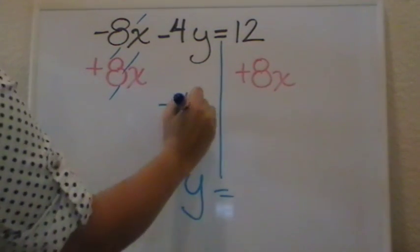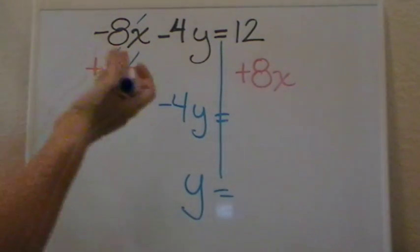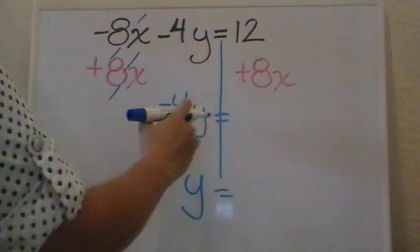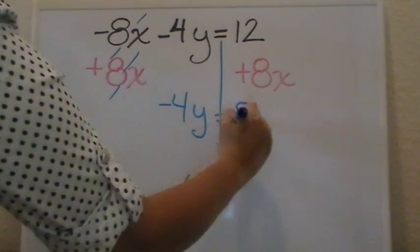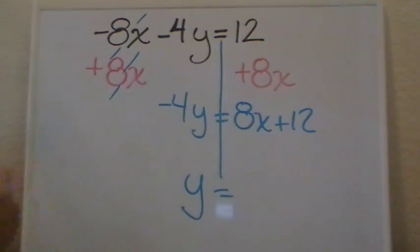Negative 4y equals, these two are unlike terms, one is a number, another one is a term with the variable x. So we cannot combine them, all that we are going to do is write them next to each other, 8x plus 12, remember our 12 was positive since the beginning.